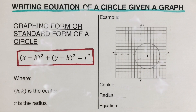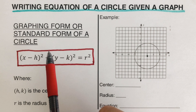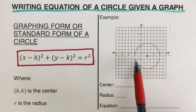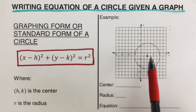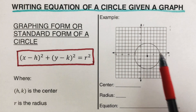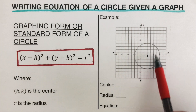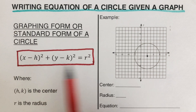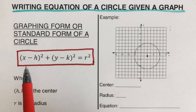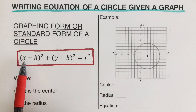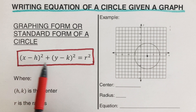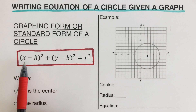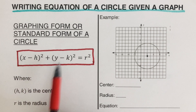Hello everyone. In this video we will be writing the graphing form, or standard form, of a circle given a circle on a graph. We are supposed to come up with an equation of this form that would work for this circle. There is another video that talks about how we got this equation — I will put the link to that video in the description box below.